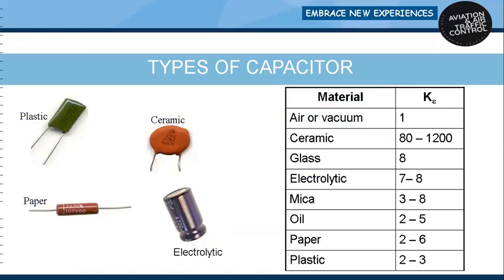Dielectric constants: air or vacuum is 1; ceramic is highest, ranging from 80 to 1200; glass is 8; electrolytic is 7 to 8; mica is 3 to 8; oil is 2 to 5; paper is 2 to 6; and plastic is 2 to 3.